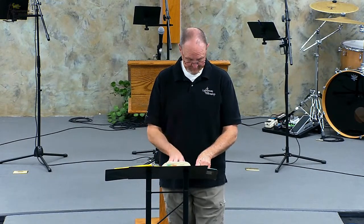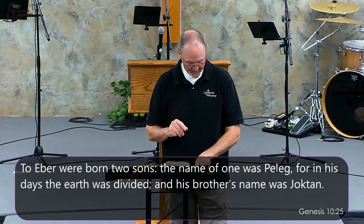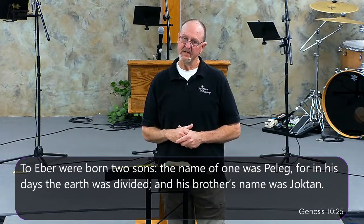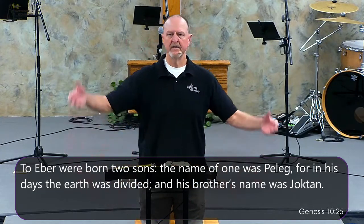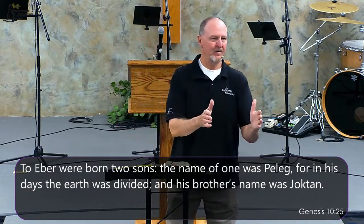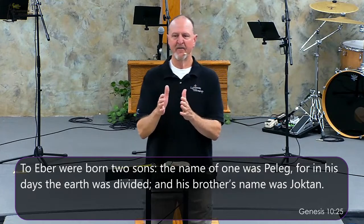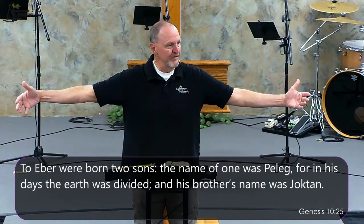Verses 21 through the balance of chapter 10 cover Shem's descendants. I'll call your attention to verse 25 — to Eber were born two sons, the name of one was Peleg. Notice this: for in his days, the earth was divided. Some people say this means the continents changed, but that is not what it means. If you look at the chronological order, Peleg came about when the Tower of Babel came about. What happened at the Tower of Babel? The earth was divided — not geographically, not the dirt, but the people were divided.